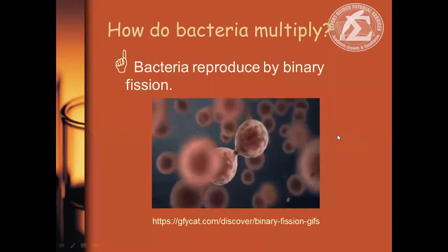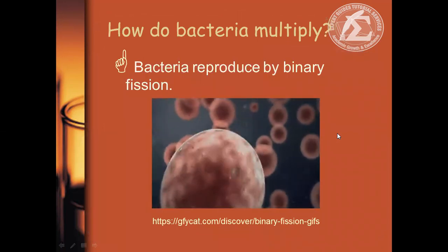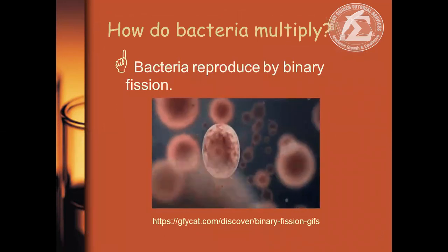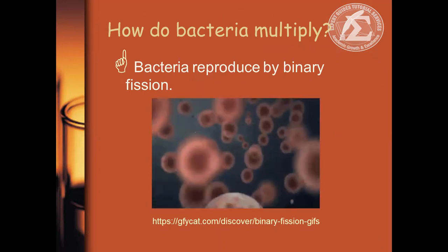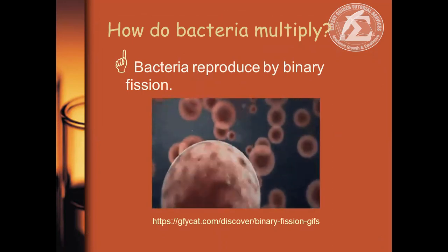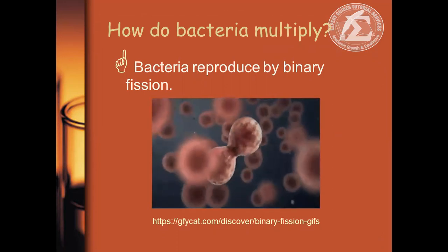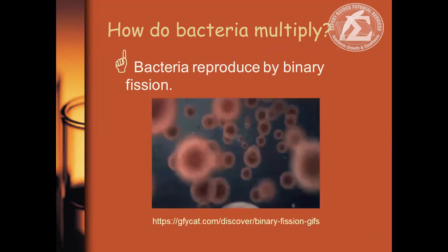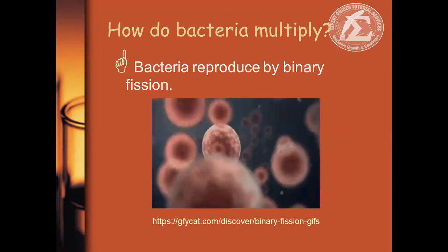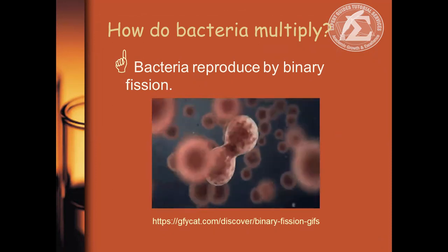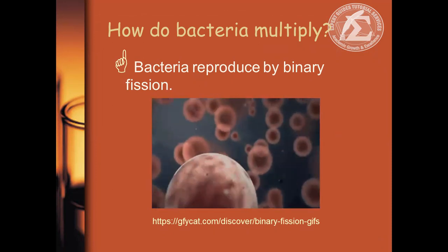How do cells multiply? Bacteria reproduce by binary fission. It basically follows the process of mitosis — a single parent cell replicates its DNA prior to division. Once the process is completed, two new daughter cells are formed.